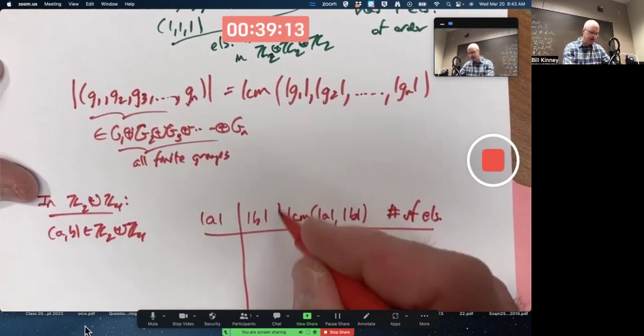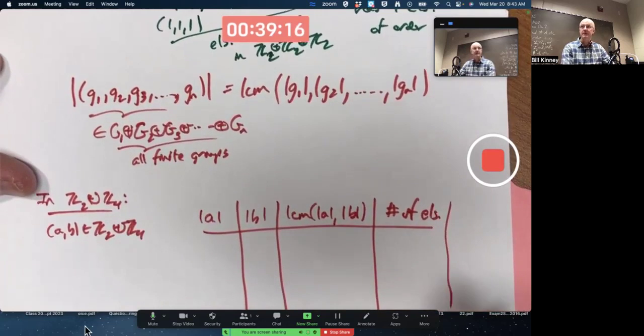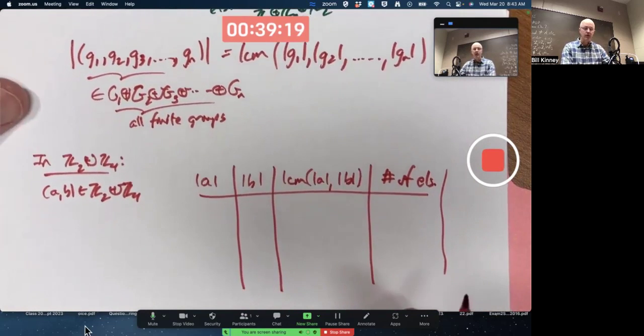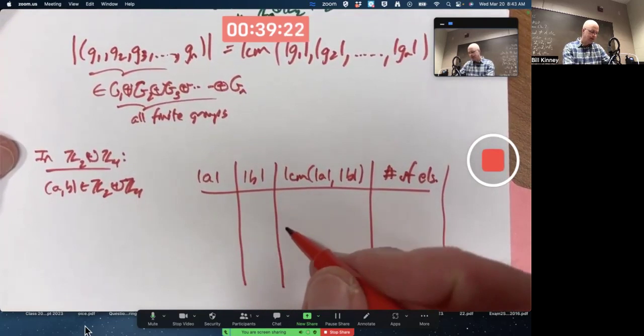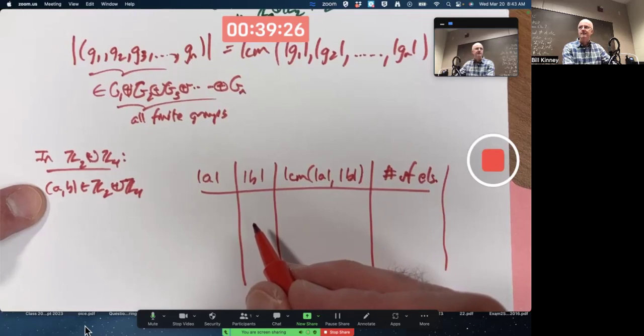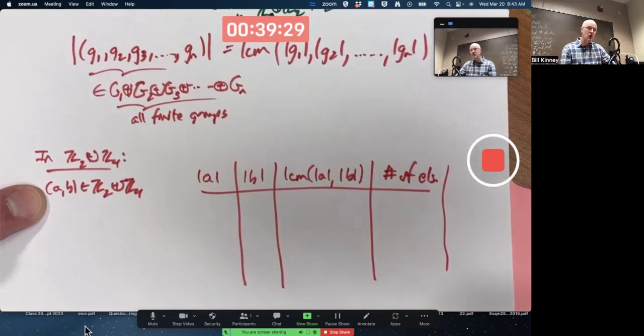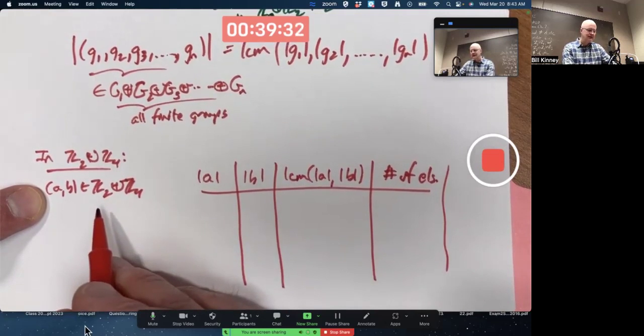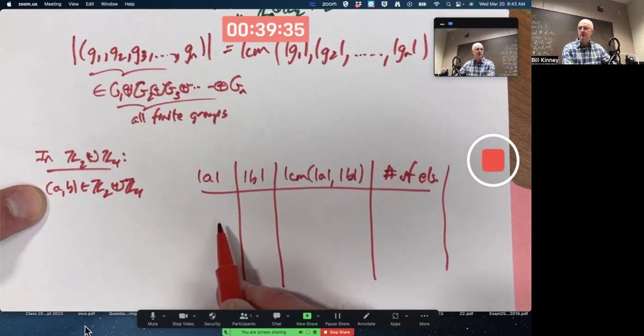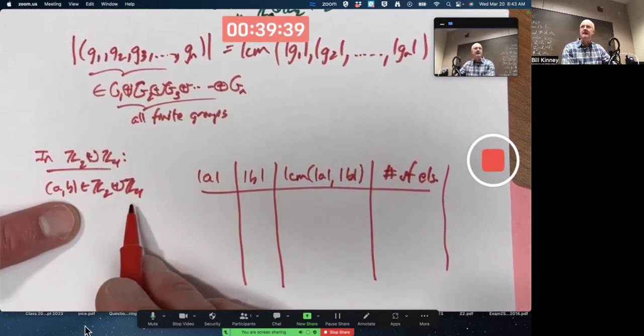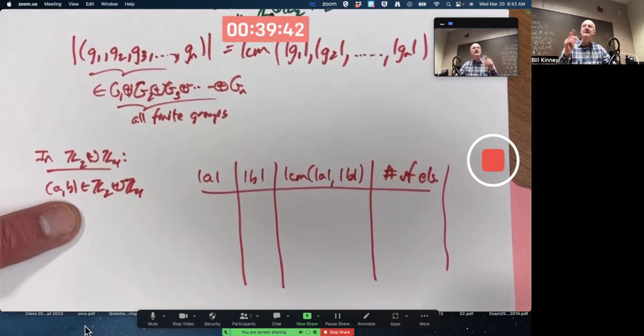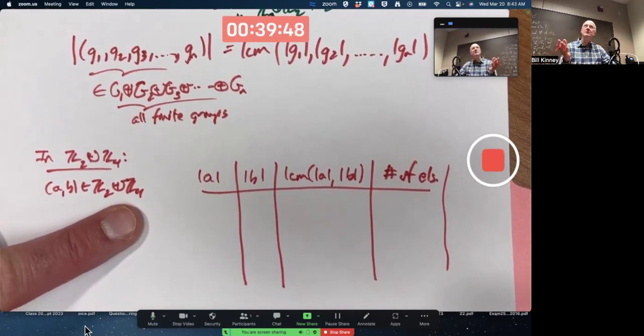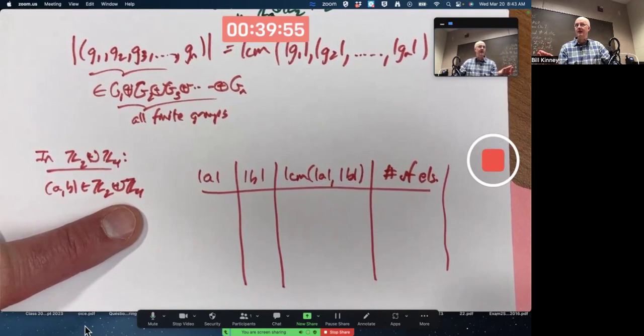And maybe I could use that to figure out the number of elements. In making a table like this, I'm actually going to figure out maybe the number of elements, for example, of order 4 as well and order 1. A can be 0 or 1. 0 has order 1. 1 has order 2 in Z2. So the order of A can be either 1 or 2. B is in Z4. It can be 0, 1, 2, or 3. 0 has order 1. 2 in Z4 has order 2. 2 plus 2 is 0. Not 4. 1 and 3 have order 4. They're generators of Z4. So the possibilities for the order of B are 1, 2, and 4.